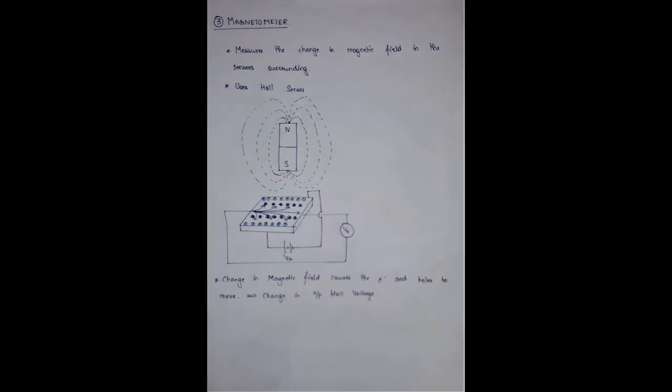When there is a Hall voltage produced, it means that the direction of the device has been changed. Magnetometers are usually used as digital as well as analog compasses. Some people might be wondering why this is a three-axis magnetometer. Magnetometer usually gives you just the direction that is north, south, east, or west. Only four directions are available.